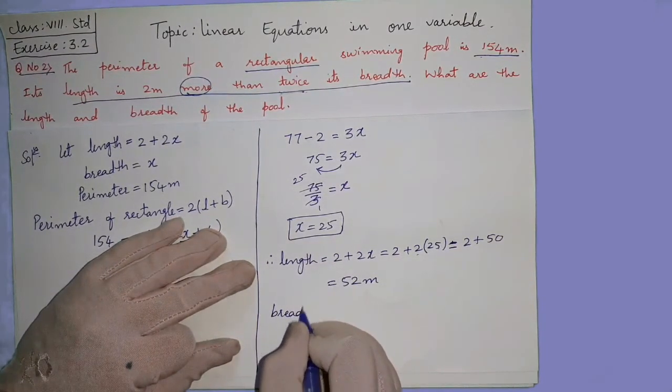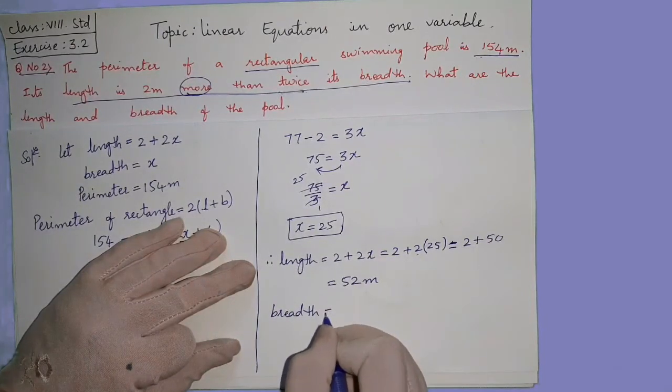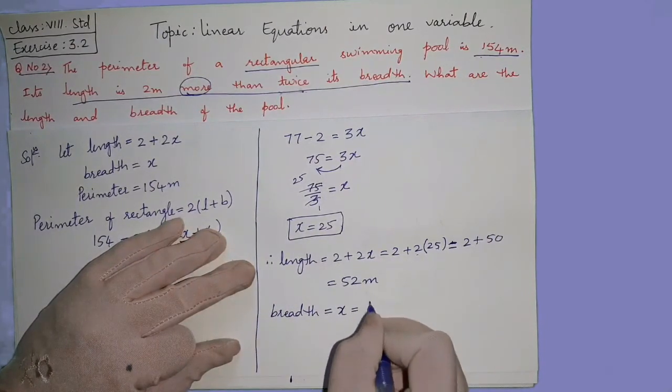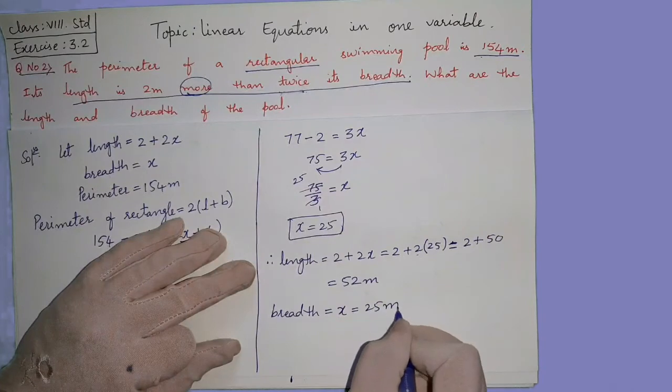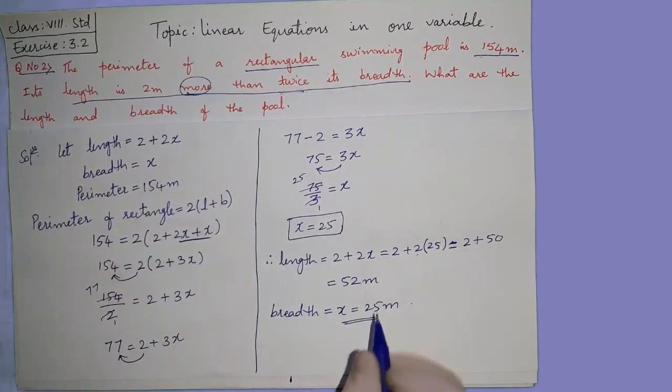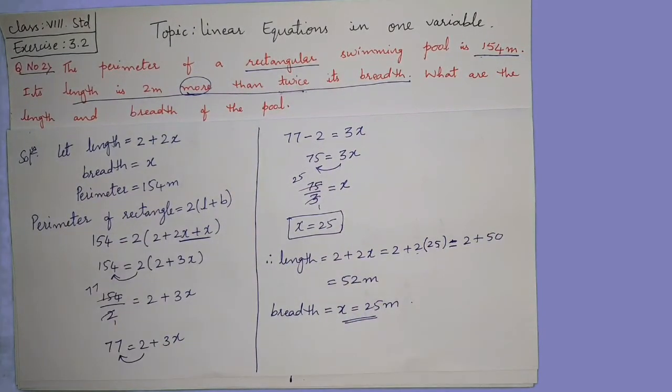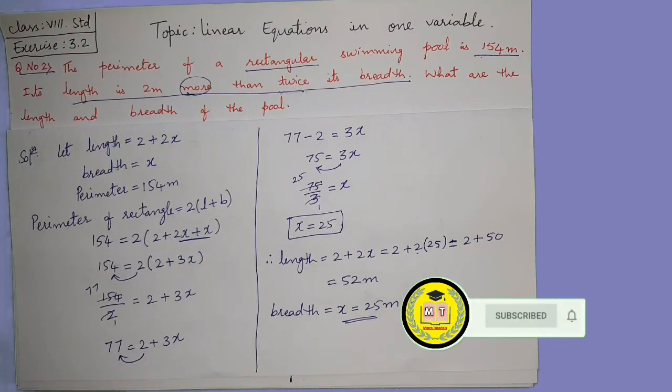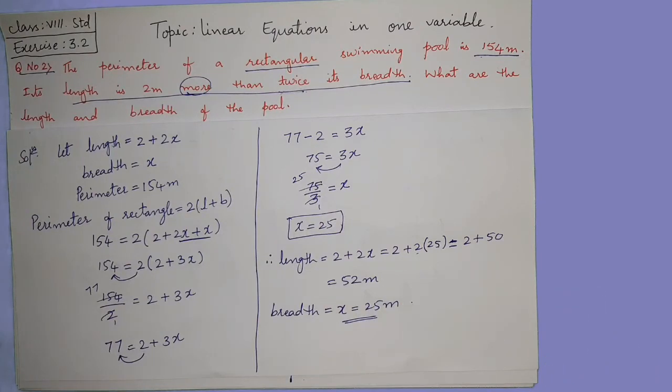And the next you are having breadth. Breadth is nothing but x which is equals to 25 meters. So for that swimming pool the length is 52 meters and the breadth is 25 meters. Hope it is clear for you. If you are having any doubt you can ask in the comment section. Thank you.